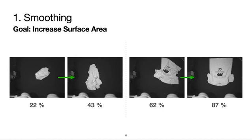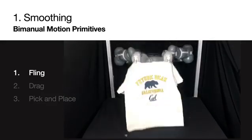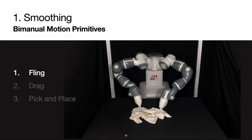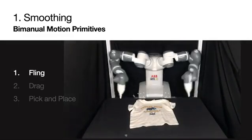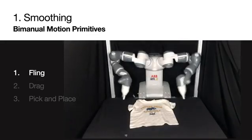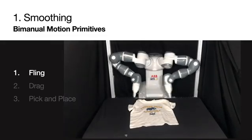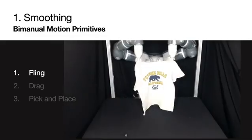Traditionally, the goal of smoothing is to maximize the garment's coverage area of the workspace. To achieve that, we developed the following bimanual motion primitives. Inspired by Ha and Song, we developed a fling primitive. Given two peak poses, this primitive will lift the garment, stretch it, and accelerate forward and backwards to unfold the garment, also using the friction with the workspace to smooth it on the table.